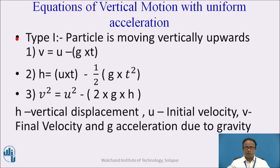Now let us consider the equations of vertical motion with uniform acceleration. Type 1: a particle is moving vertically upwards. The expression for the final velocity is v = u − gt, where g is the acceleration due to gravity, u is the initial velocity, and t is the time taken during the motion. The minus sign is used because the direction of g is towards the centre of the earth, so in the vertical upward journey the minus sign is taken.